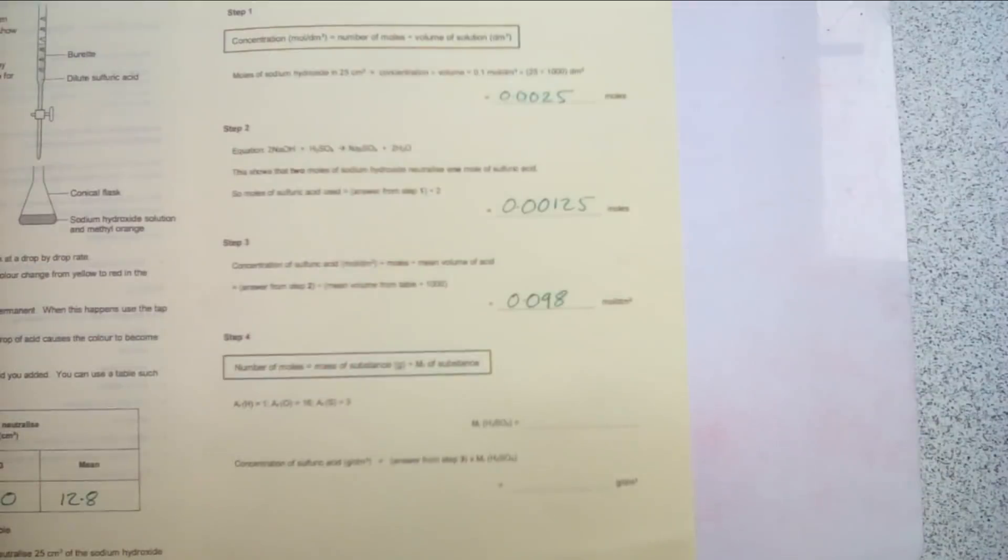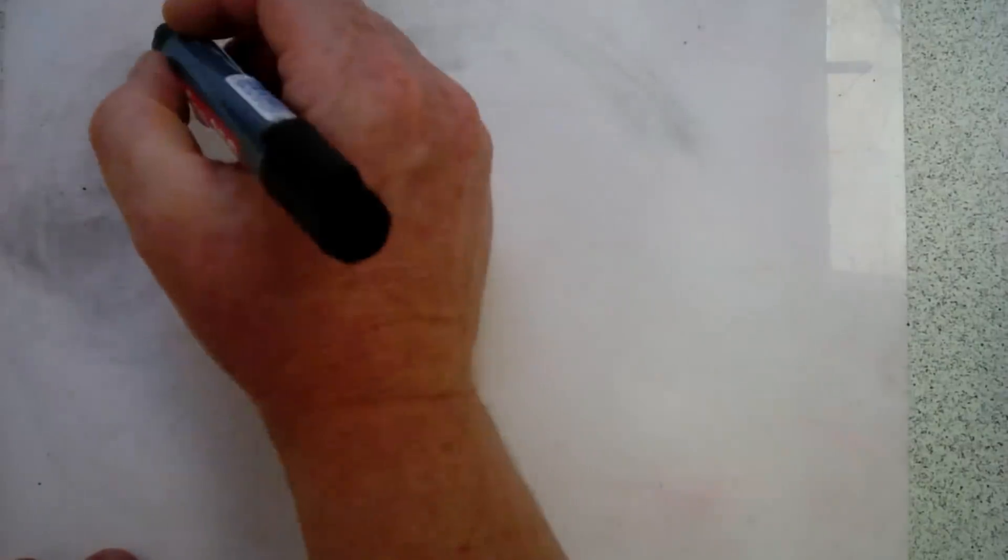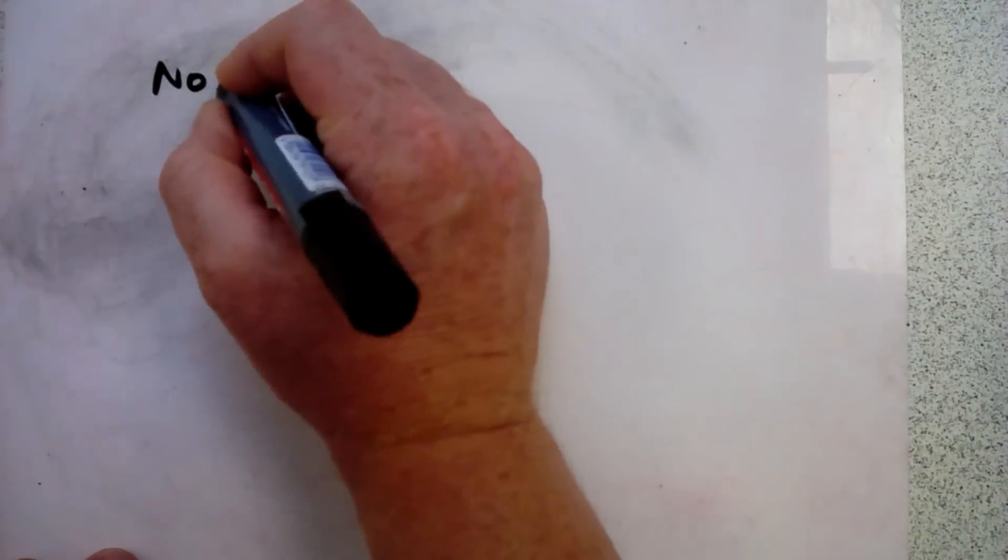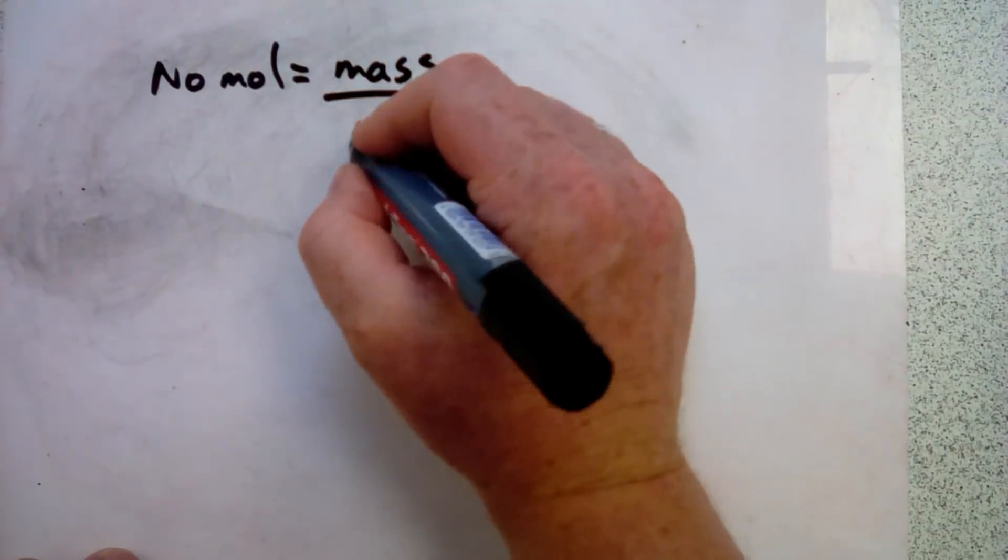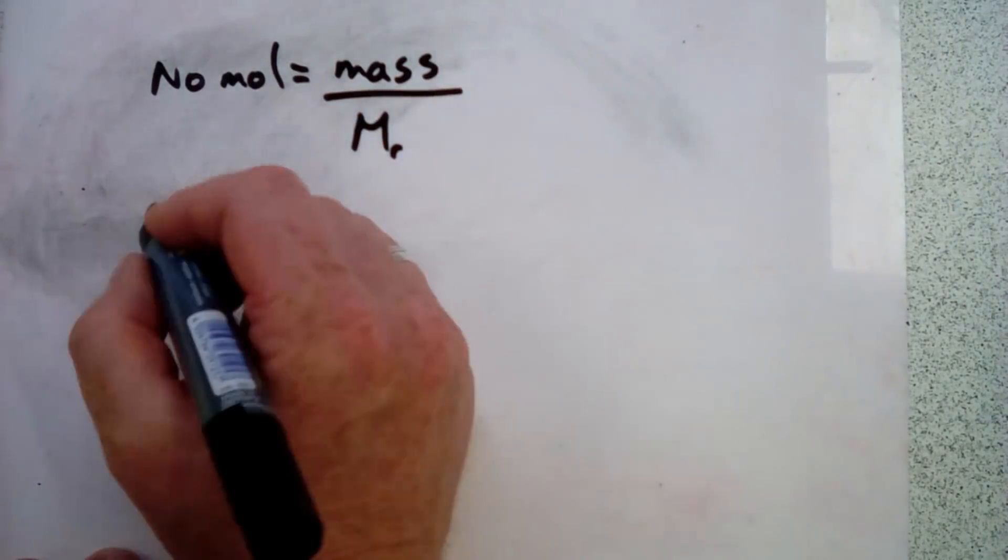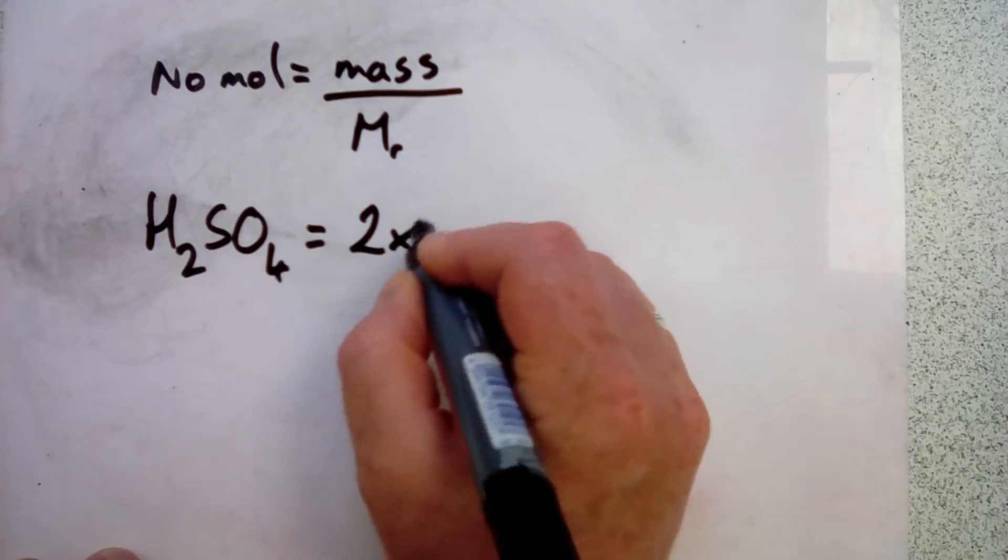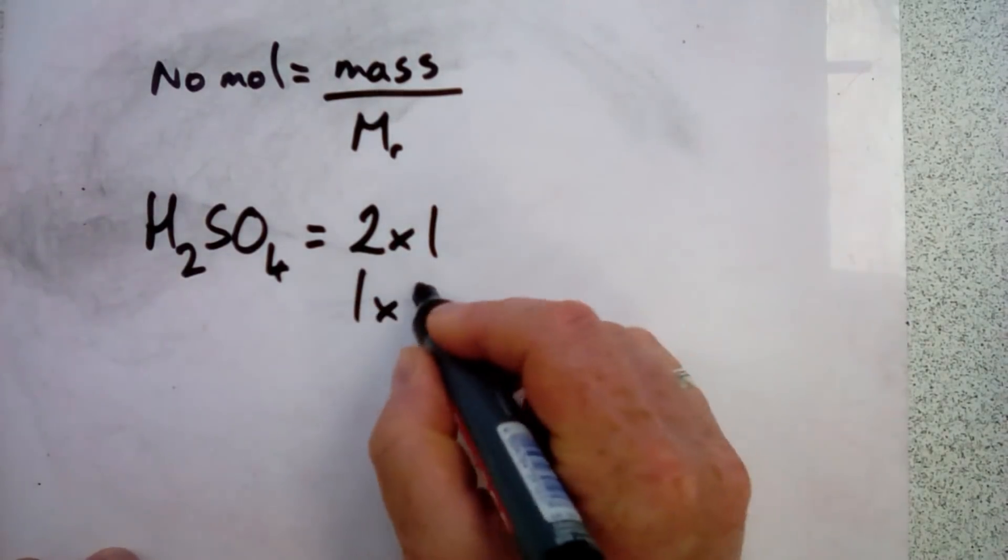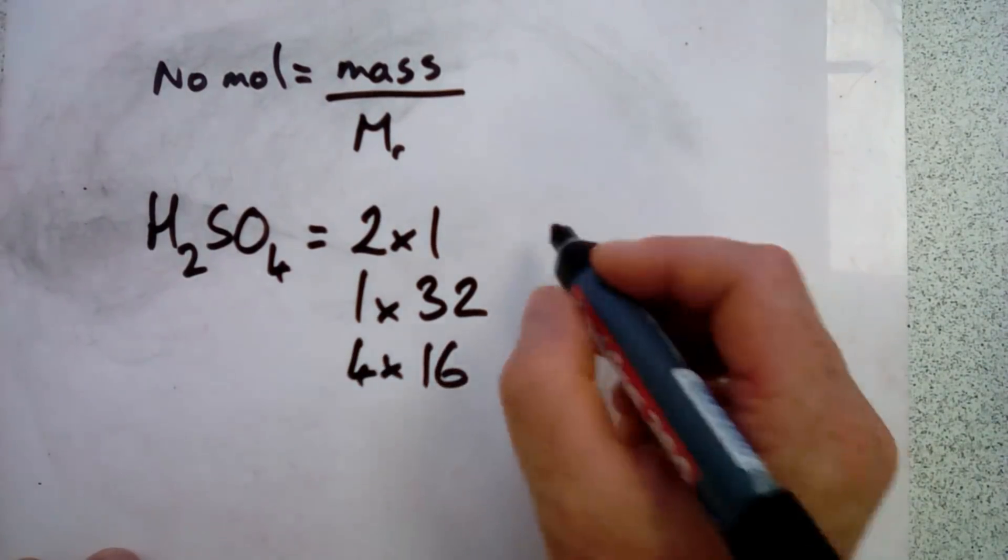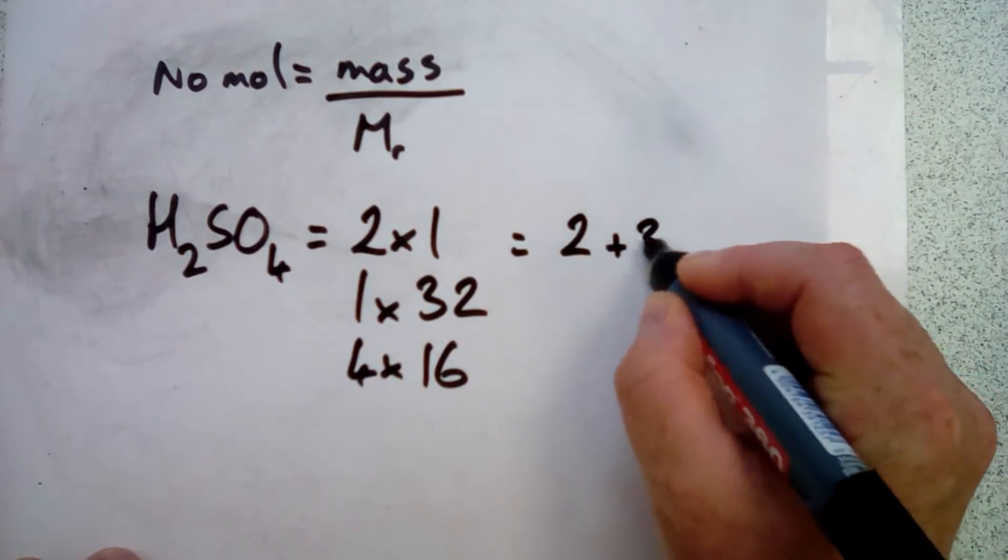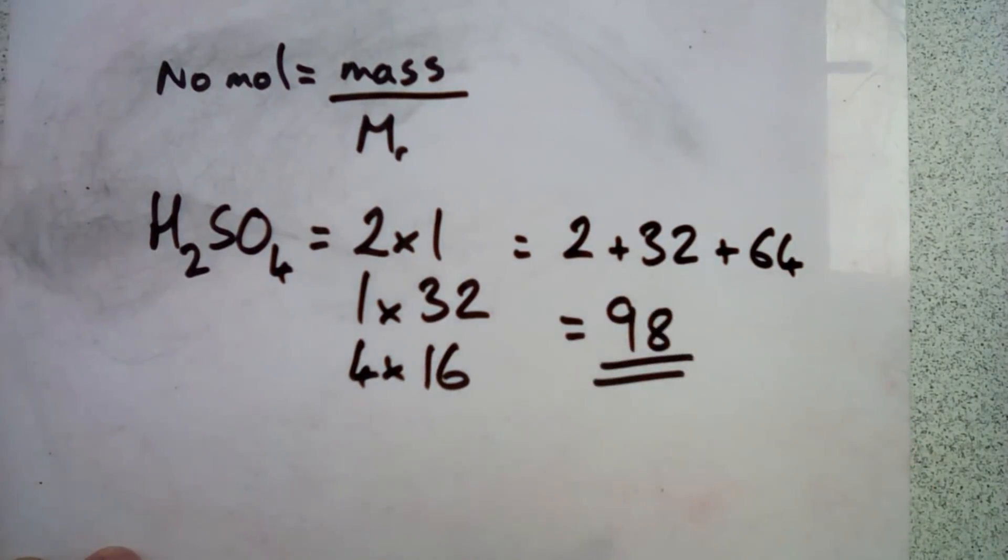Looking back at our results, we've now filled in that calculation. The number of moles is mass divided by the relative molecular mass of the substance. Relative molecular mass of H2SO4: we've got two lots of hydrogen which has a mass of one, one lot of sulfur which has a mass of 32, and four lots of oxygen which has a mass of 16, which gives us 2 plus 32 plus 64, which gives us a relative molecular mass of 98.